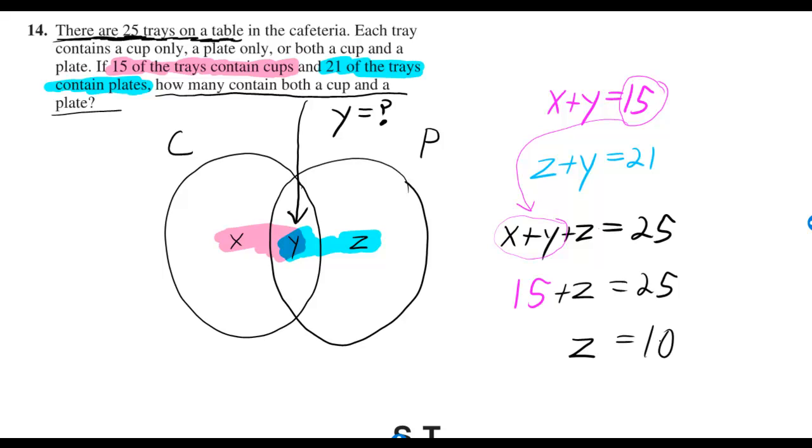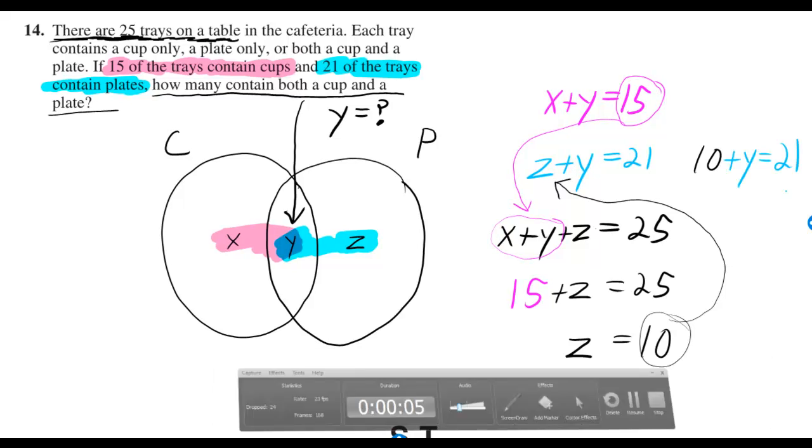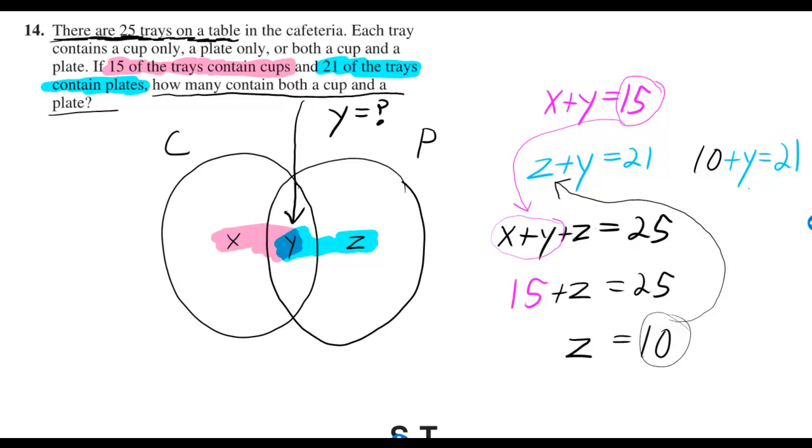So Z equals 10, but then we can substitute the 10 into Z plus Y equals 21, and you can figure out that Y equals 11.